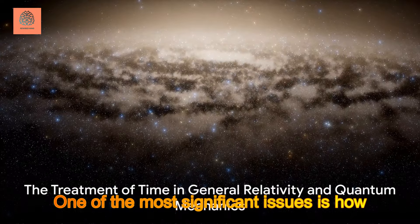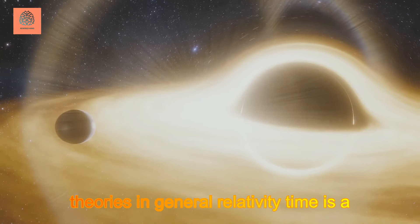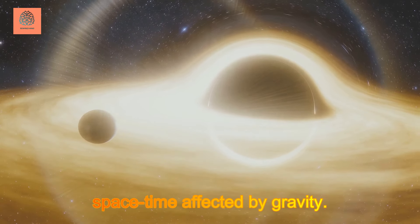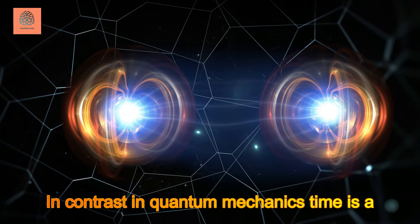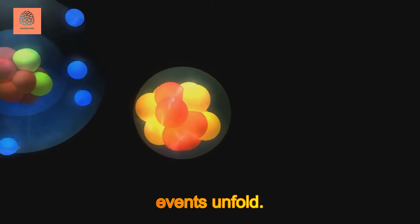One of the most significant issues is how time is treated differently in these theories. In general relativity, time is a dimension intertwined with the fabric of space-time, affected by gravity. In contrast, in quantum mechanics, time is a fixed background against which quantum events unfold.